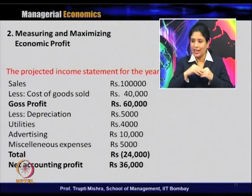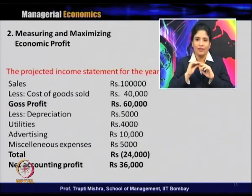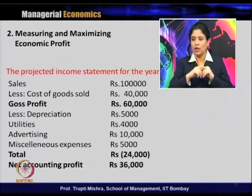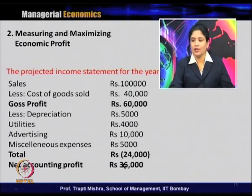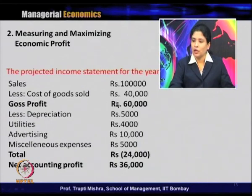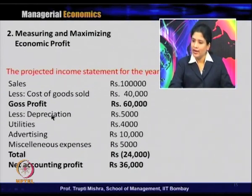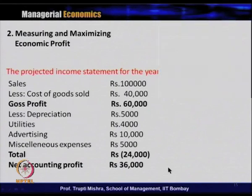From the gross profit we deduct further expenses: depreciation of 5,000; utility expenditure of 4,000; advertising expenditure of 10,000; and miscellaneous expenses of 5,000 — totaling 24,000. Deducting this from the gross profit of 60,000 gives a net accounting profit of 36,000.